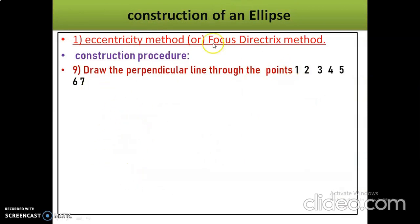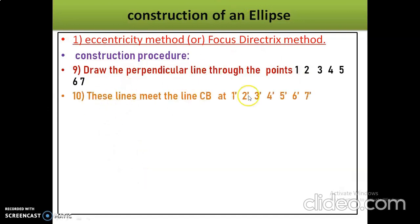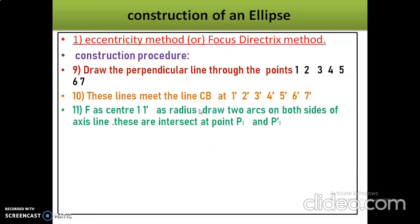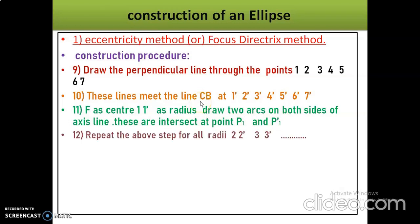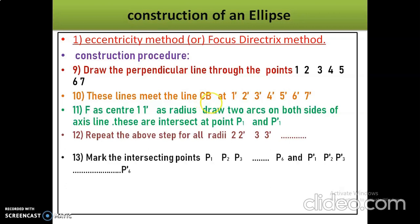Step 9 — draw perpendicular lines through points 1, 2, 3, 4, 5, 6. These perpendicular lines will meet the CB line at points 1', 2', 3', 4', 5', 6'. Step 10 — with F as center and 1-1' as radius, draw two arcs on both sides of the axis line, intersecting at P1 and P1'. Repeat for radii 2-2', 3-3', 4-4', 5-5', 6-6' to get P2, P3... P6 and P1', P2'... P6'.